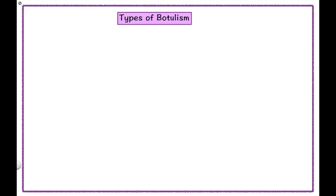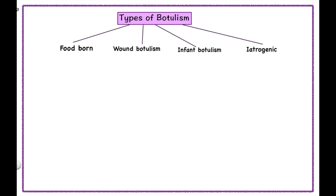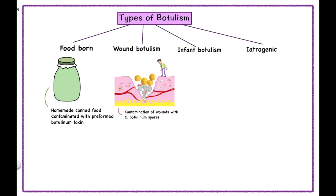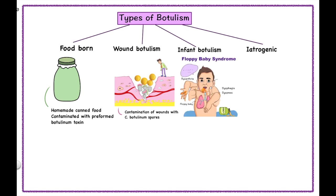Now let's discuss about the types of botulism. First is foodborne botulism, which results from consumption of foods contaminated with preformed botulinum toxin, commonly due to consumption of homemade canned food. Next is wound botulism, which results from contamination of wounds with Clostridium botulinum spores. It presents like foodborne botulism except for the absence of gastrointestinal features. Next is infant botulism, also called floppy baby syndrome. It can cause dysarthria, ptosis, dysphagia and dyspnea, and is caused by ingestion of contaminated food — usually honey — containing spores of Clostridium botulinum in children less than 1 year of age. Next is iatrogenic botulism, which results from injection of an overdose of the toxin.